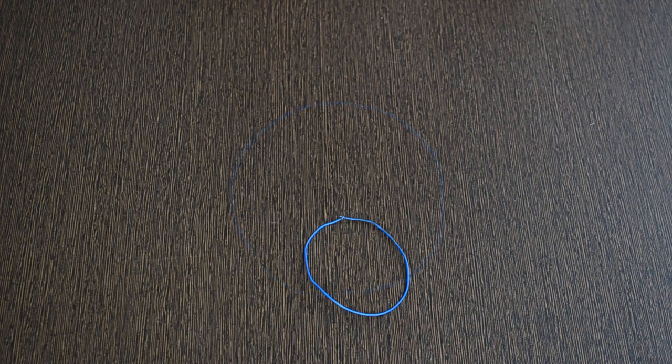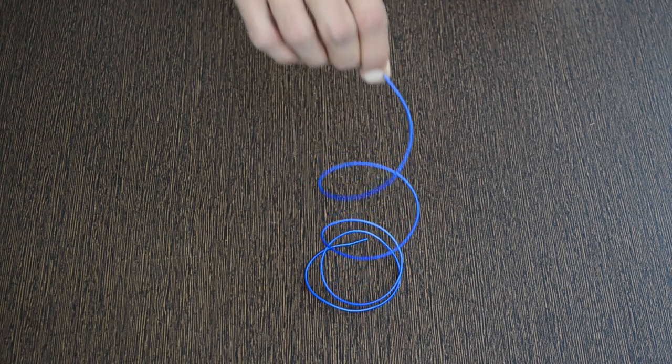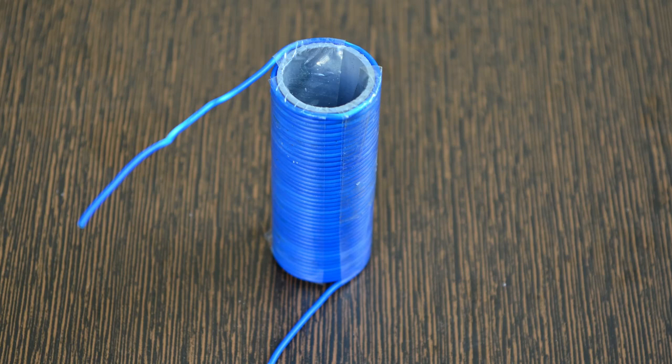Magnetic field formed due to a loop is very small. It can be enhanced by having more such loops next to each other. This can be achieved by closely winding wire into a helical shape.